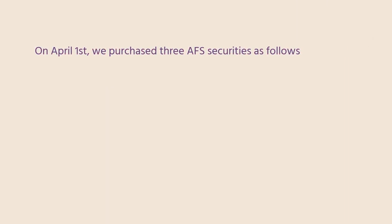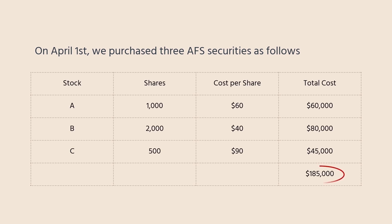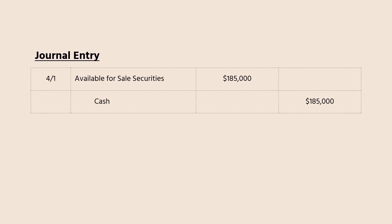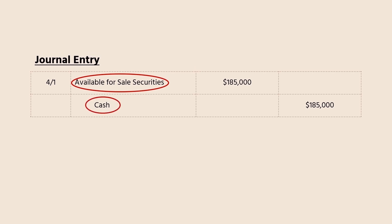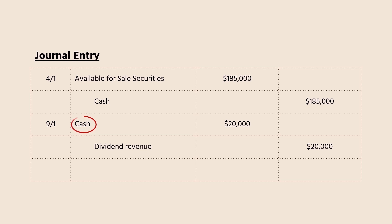To better understand how we account for AFS securities transactions, let's look at an example. On April 1st, we purchased a total of $185,000 of available for sale securities. Our journal entry is a debit of $185,000 to available for sale securities, and a credit of $185,000 to cash. On September 1st, a cash dividend of $20,000 is received, so we debit cash $20,000 and credit dividend revenue $20,000.